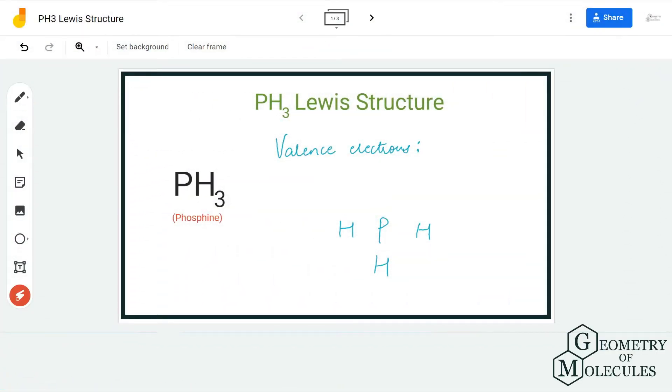Hi guys, welcome back to our channel. In today's video we are going to help you determine the Lewis structure for PH3 molecule. It's the chemical formula for phosphorous trihydride.